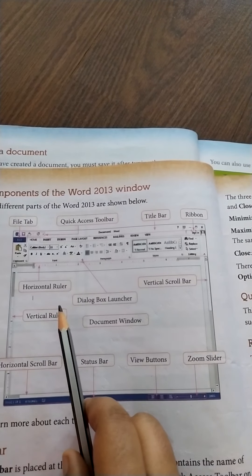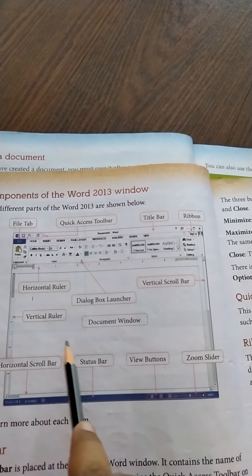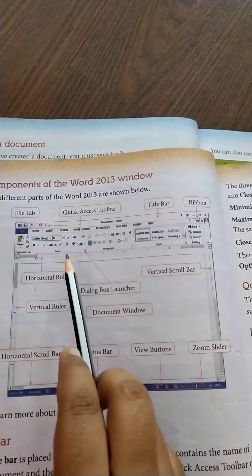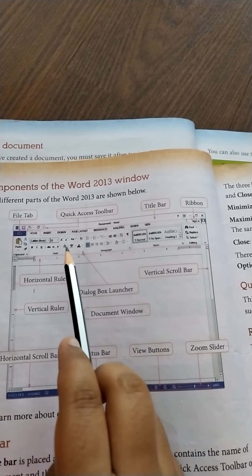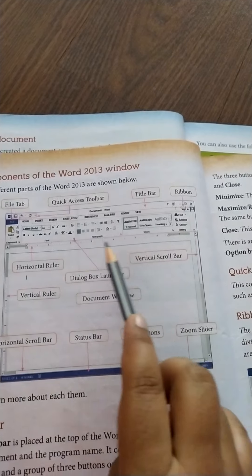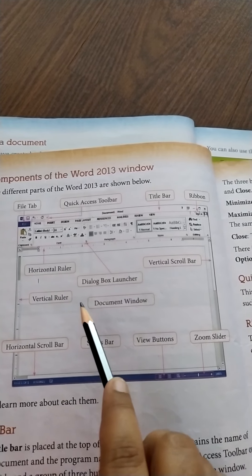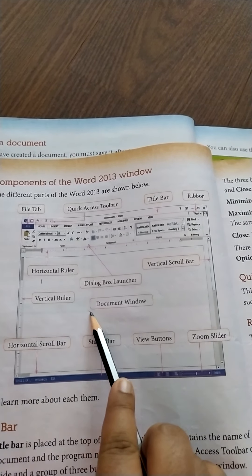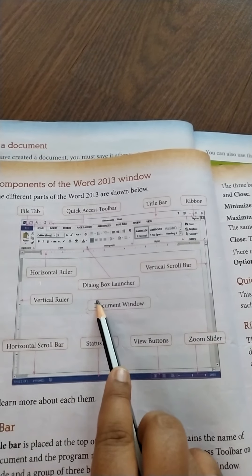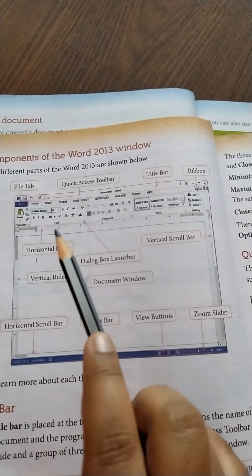Whenever you click this, a new window will open, and over there you can see some more commands related to this particular group. Now this white area is called the document window. Over here, the cursor is blinking on some place from where we can start our typing.